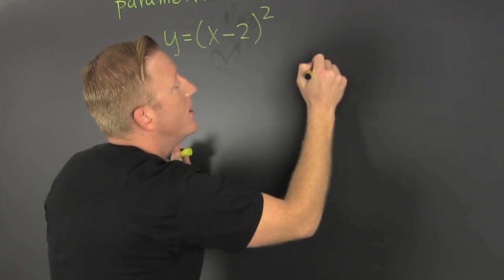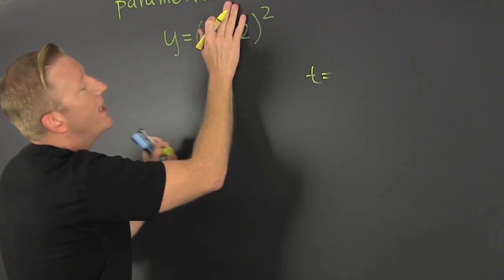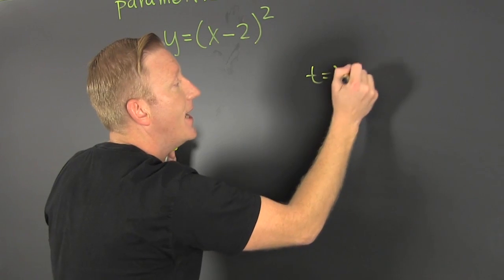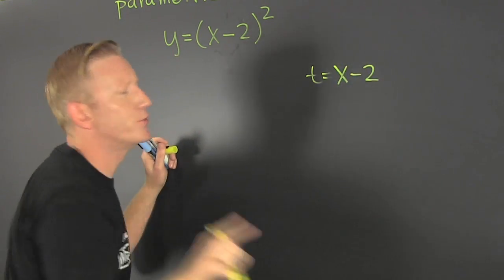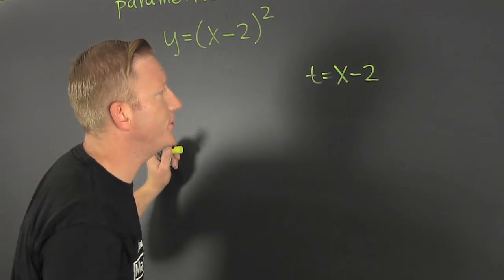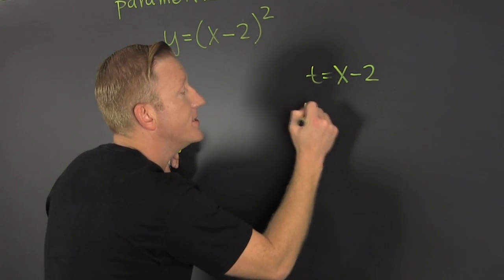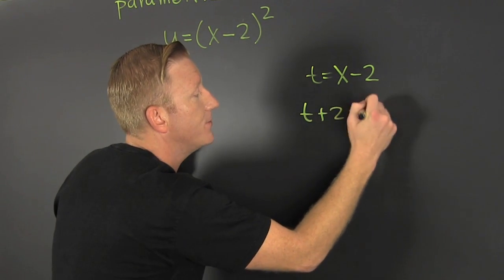Here we go. We're going to say T is whatever you're covering up. Here it happens to be X minus 2. So now when you do that, you're going to solve this guy for X. So this is T plus 2. That's going to be X.